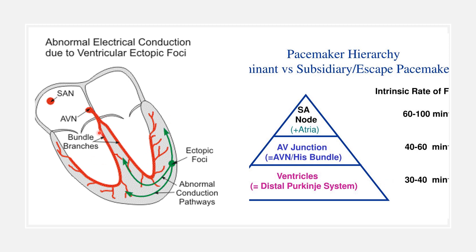If the SA node fails to produce an impulse, then the AV node becomes the pacemaker, and the heart rate, instead of 70 to 80, will be reduced to 50 to 60. If the AV node fails, the bundle of His will take charge and there will be further slowing of the heart rate. If the bundle of His fails, the Purkinje system will take charge and further reduction of the rate will occur. This phenomenon is called the hierarchy of pacemakers.